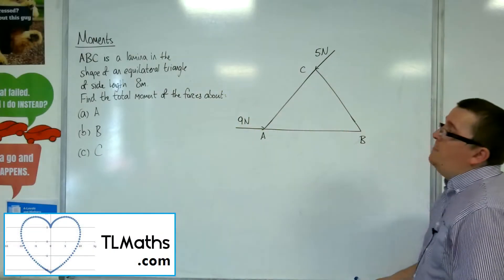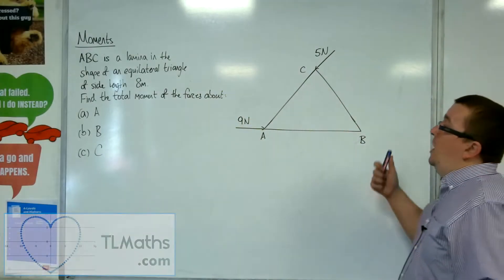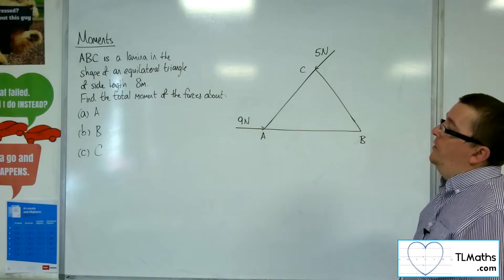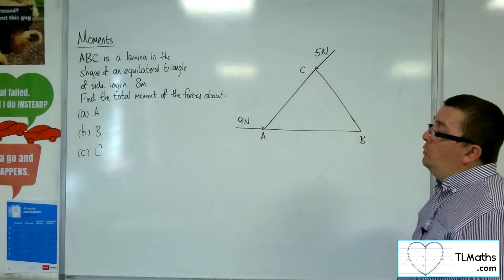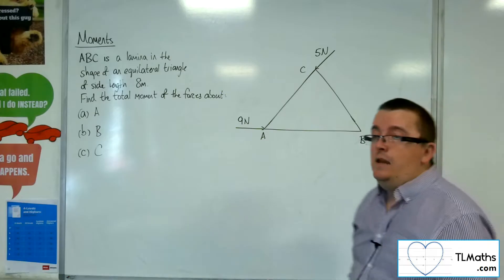Okay, so in this video we've got ABC is a lamina in the shape of an equilateral triangle of side length 8 metres. Find the total moment of the forces about A, B and C.